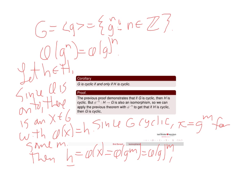Since this was a generic element of H, H equals the subgroup generated by phi of G. In other words, H is cyclic. That's really the proof.